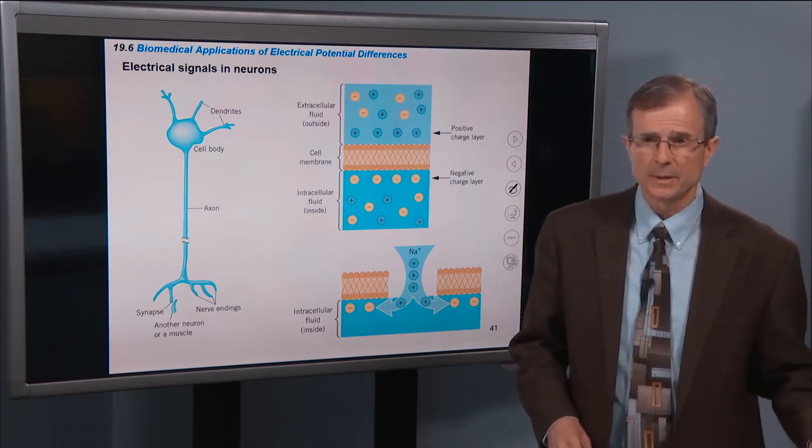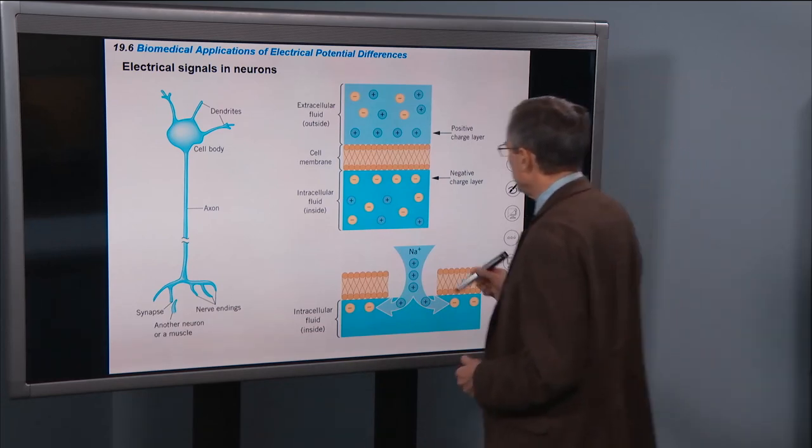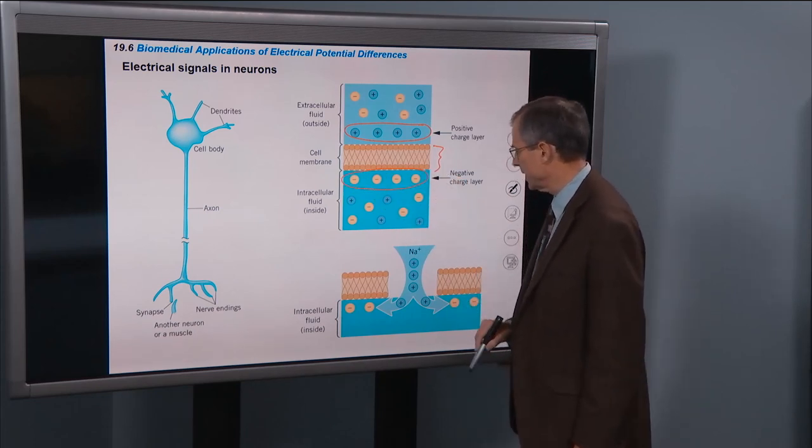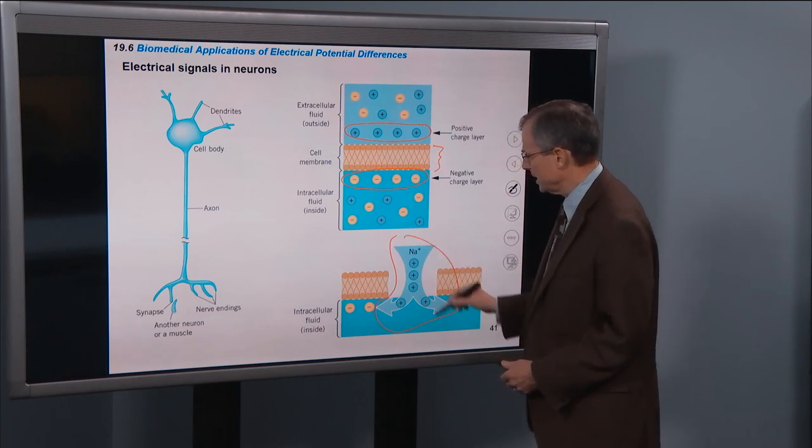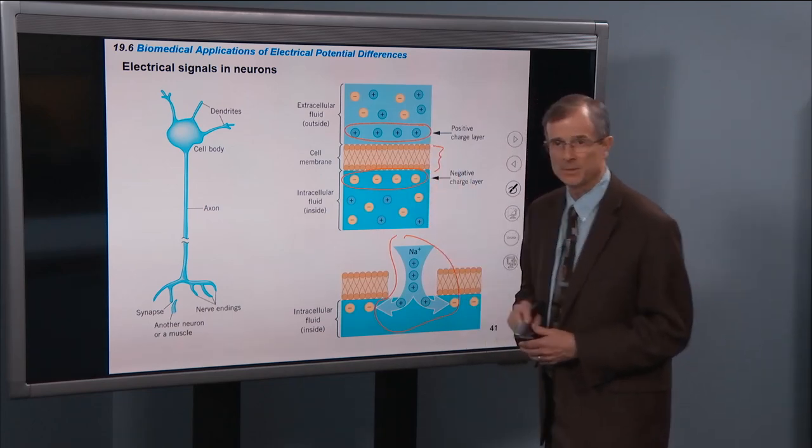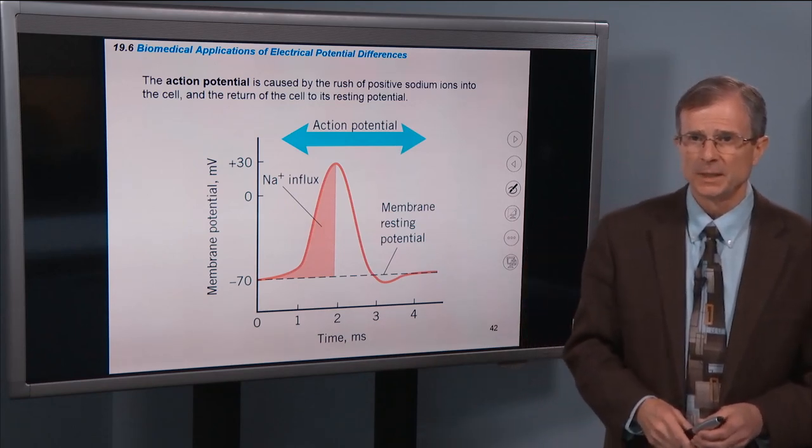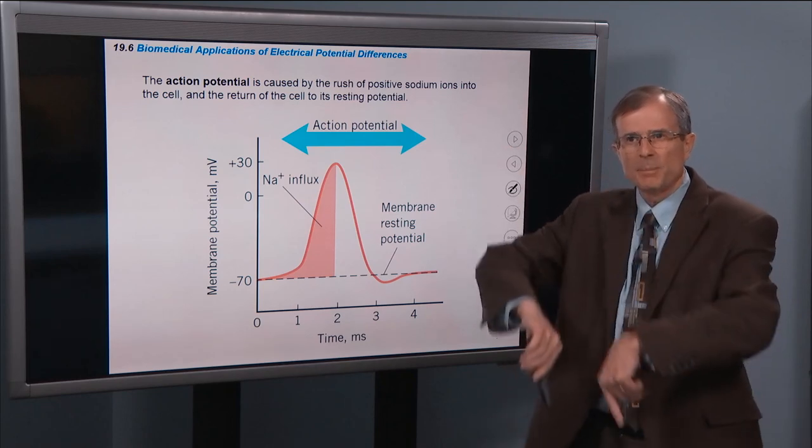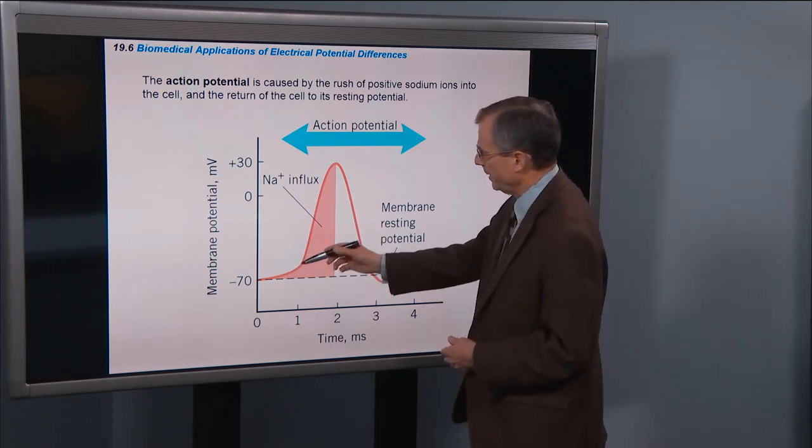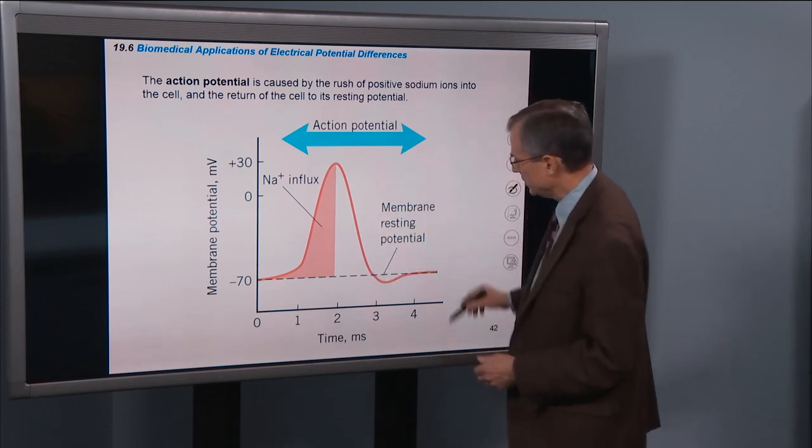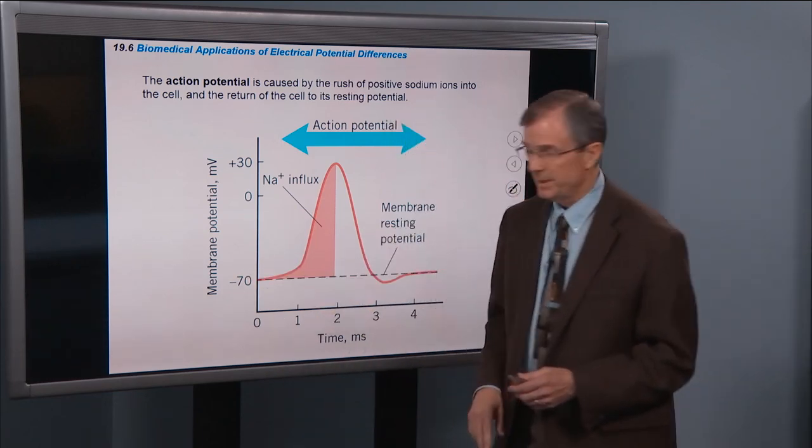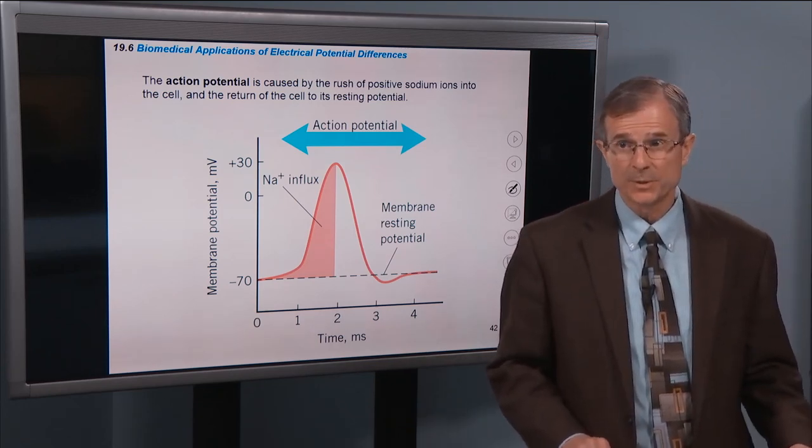Another place these principles are used are in cells. There's a cell membrane that has a potential difference across it. Positive charges on one side, negative charges on the other side, and then a sodium channel can open up to help to equalize that potential difference across that. So essentially this cell membrane is acting like a capacitor with positive charge on one side, negative on the other side, with an action potential caused by the rush of those positive sodium ions into the cell, and the return of the cell to its resting potential. So you get a membrane potential that increases, then it decreases, then eventually comes back to its normal potential of minus 70 millivolts. Milli being 10 to the minus 3.